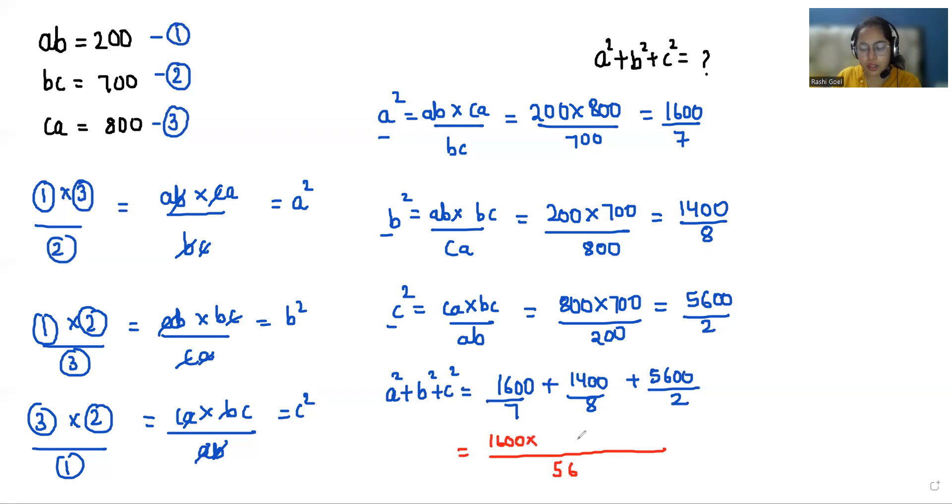So we get 1600 times 8 plus 1400 times 7 plus 5600 times 28. When we multiply and add we get 179400 by 56. We can divide numerator and denominator by 8 so we get the value 22425 by 7. So the value of a² plus b² plus c² is 22425 by 7. I hope it's clear and easy to solve. If you find it useful please give us a thumbs up and do subscribe to our channel. Stay tuned.